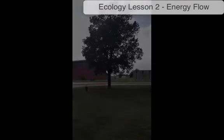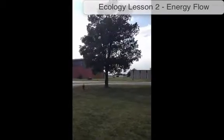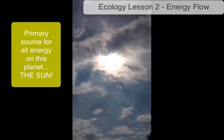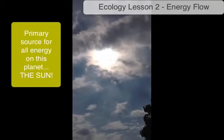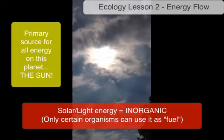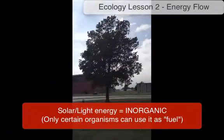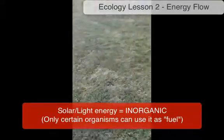First off, to talk about the primary flow of energy, let's head outside. I'm out here in the front lawn of the high school, and I just wanted to quickly talk about how energy flows naturally through this environment. The main source of all this energy is right up there in the sky, our sun. You can kind of see it right now behind the clouds. It's an inorganic source of energy, solar light energy, that's being accepted by that guy right there and the stuff that's all across the ground.